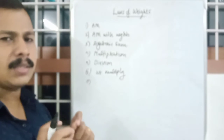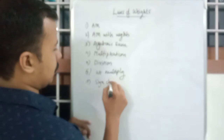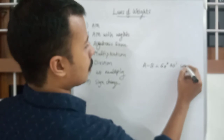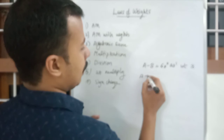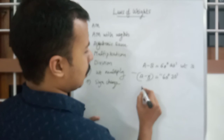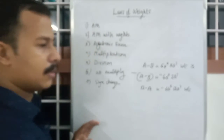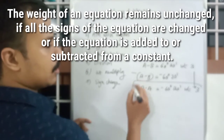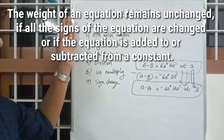Law 7: Sign change. Suppose A minus B equals 60 degrees 20 minutes with weight 3. Changing the sign gives B minus A equals minus 60 degrees 20 minutes. The weight remains unchanged — it is still 3. So if you change the sign of an equation, the weight will be unchanged.